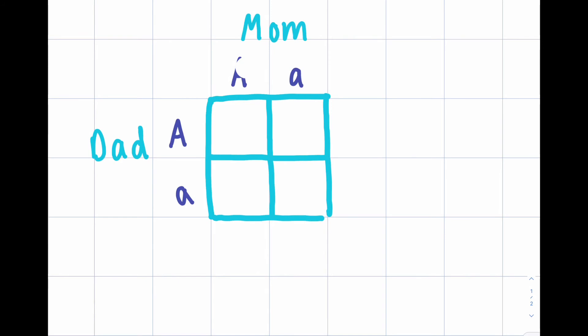Let's switch it up and say that Rosie's mom is albino. So, she has two lowercase a's. When you have two lowercase a's, or two uppercase alleles, we call those homozygous.